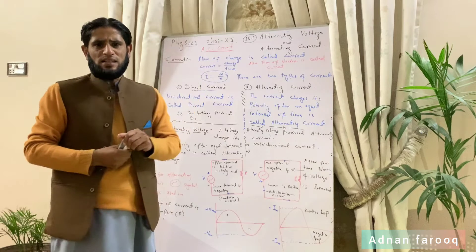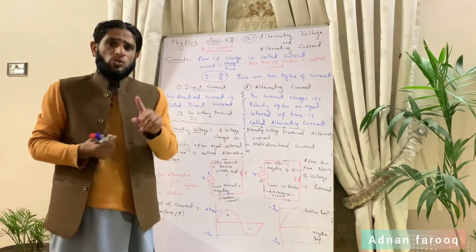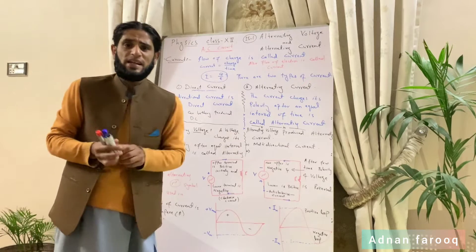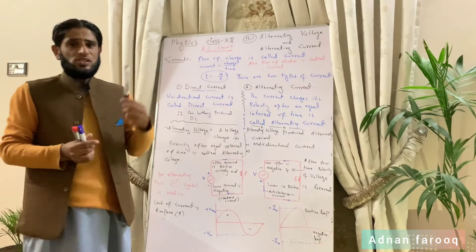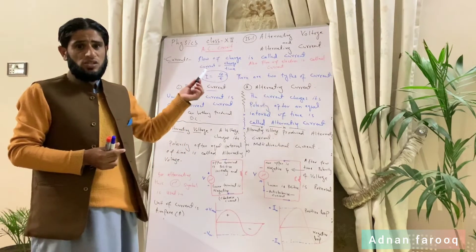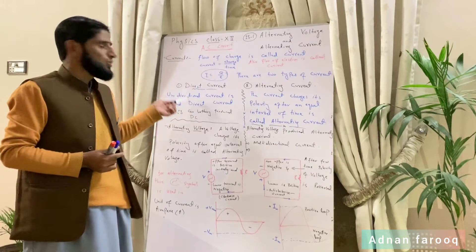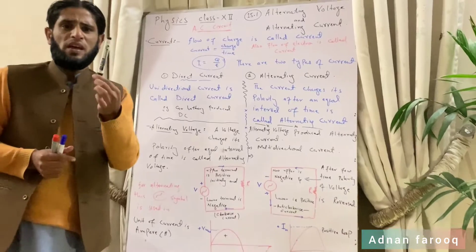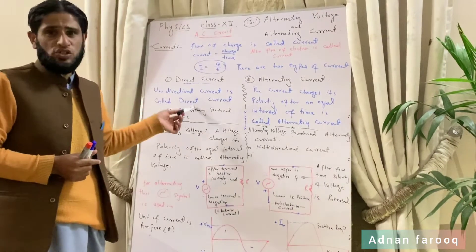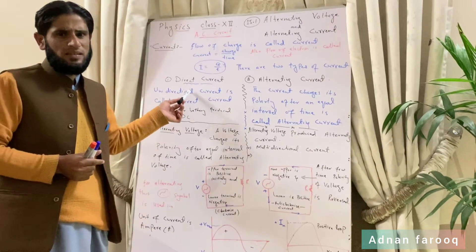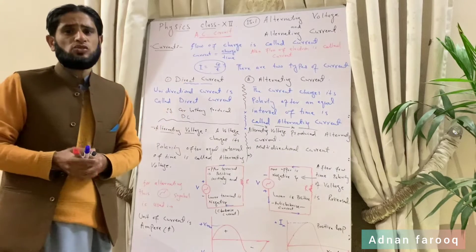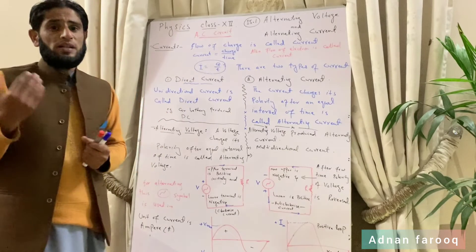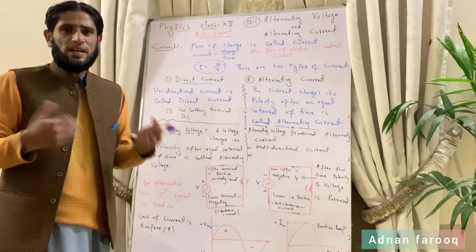آج ہمارا جو topic ہے وہ alternating circuit ہے — کہ alternating کیا ہوتا ہے؟ ایک ہوتا ہے direct current — unidirectional current — ایسا current جس کی ایک ہی direction ہو، جو صرف ایک سمت میں move کرے، وہ direct current کہلاتا ہے۔ مثال کے طور پر ہماری car کی battery direct current کا source ہے۔